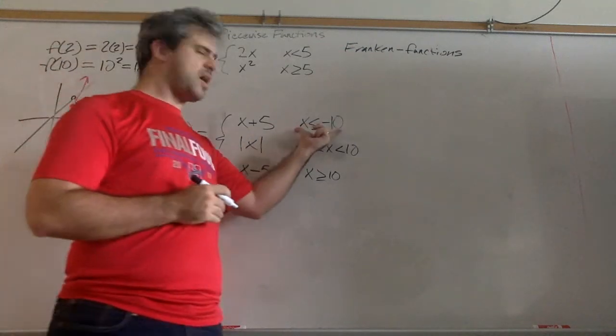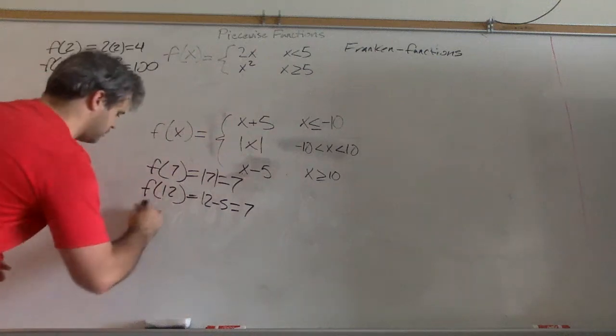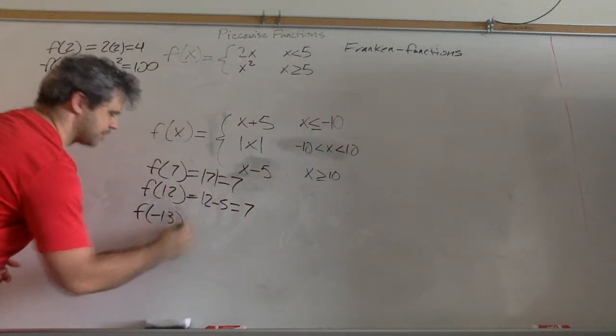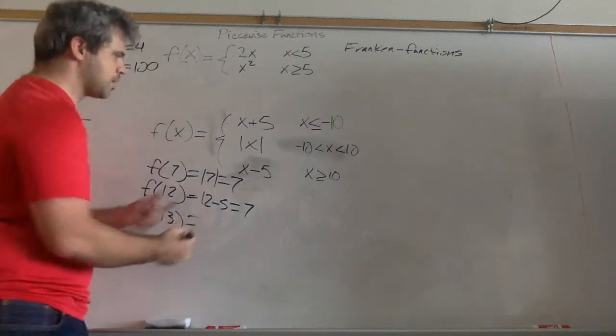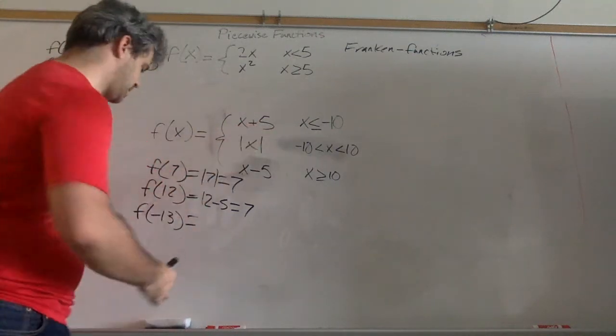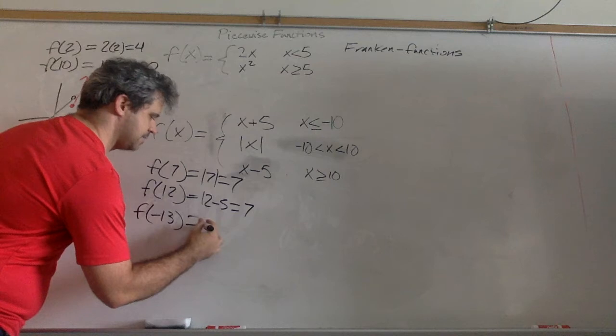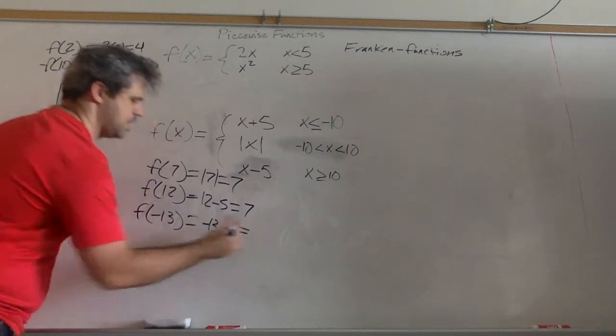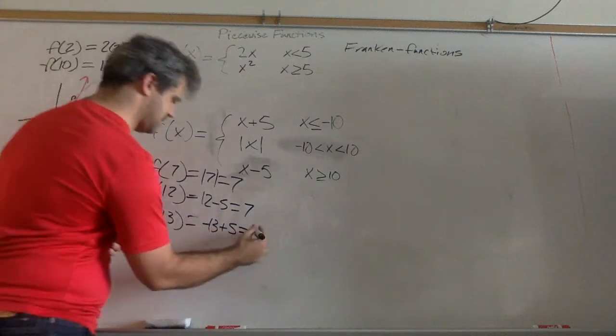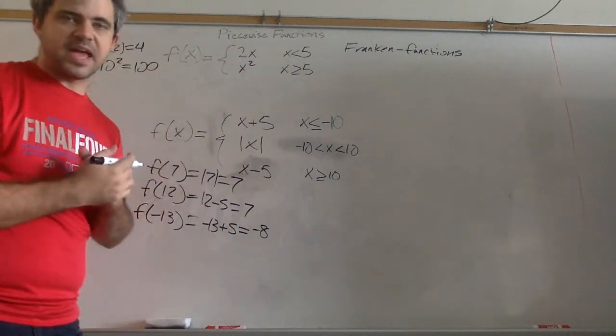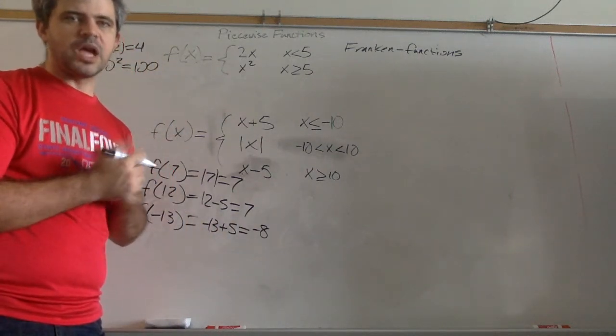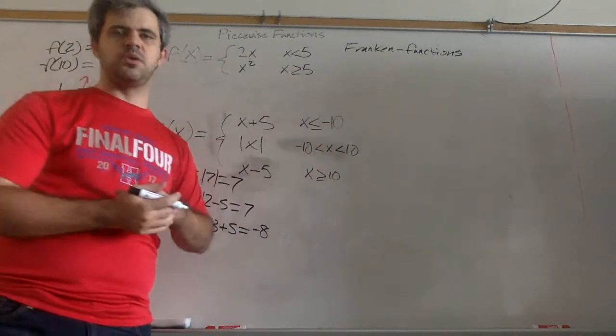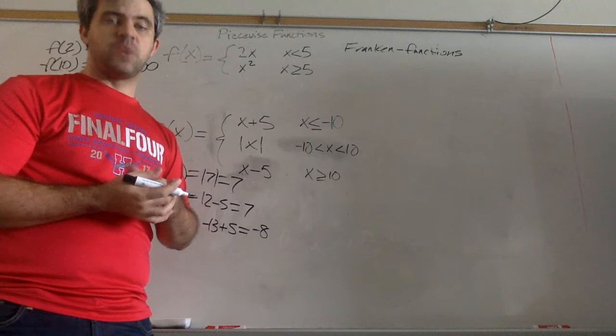And any number that was less than negative 10, for instance, negative 13, we're going to follow this rule right here. Negative 13 plus 5, I believe that's negative 8. So we're going to use the rule based on what it says to do.